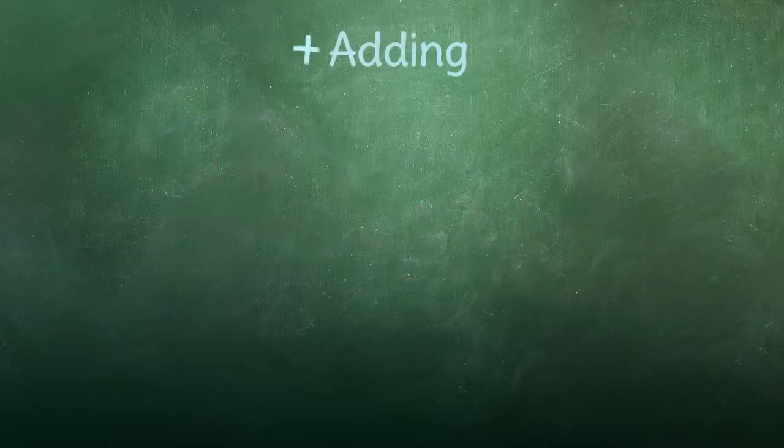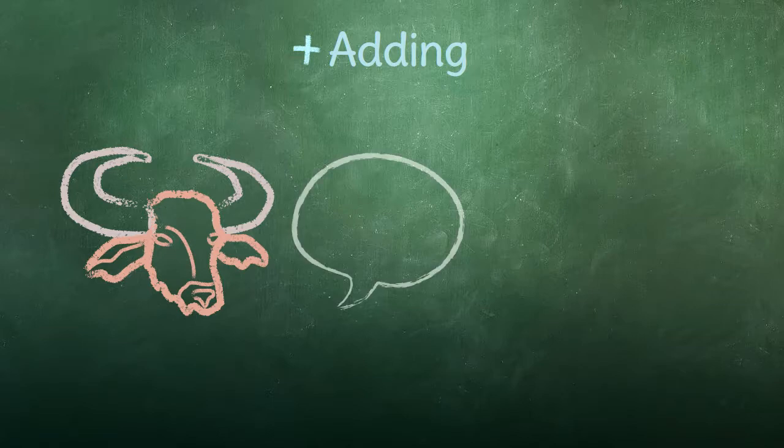For example, if we take the word ox and add the sound b at the beginning, we create the word box.